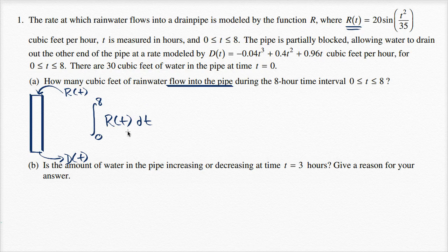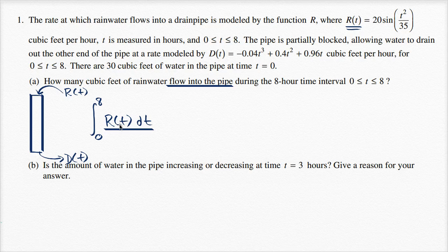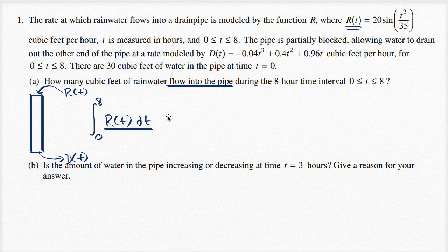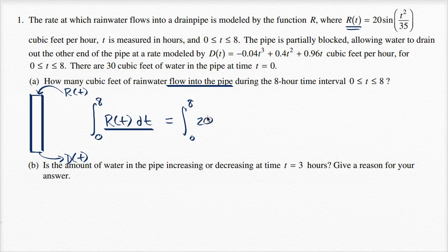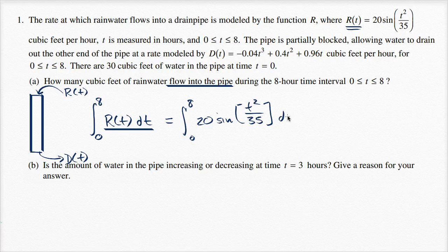Once again, what am I doing? R(t) times dt, this is how much flows, what volume flows in over a very small interval dt, and then we're going to sum it up from t equals zero to t equals eight. That's the power of the definite integral. And so this is going to be equal to the integral from zero to eight of 20 sine of t squared over 35 dt.